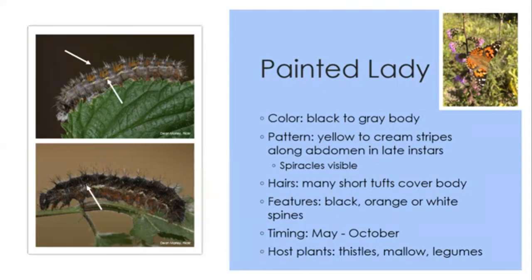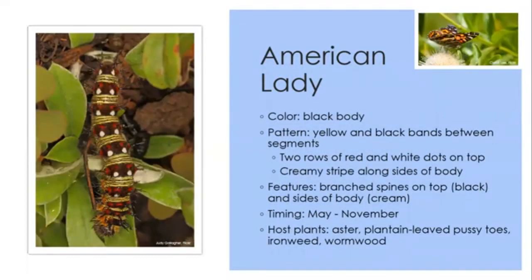While the painted lady butterfly looks very similar to the American lady, the caterpillars look drastically different. The American lady caterpillar has a black body overall with yellow and black bands between the segments, two rows of red and white dots on top, and a creamy stripe on the sides. It has branched spines all along the body that come out of the red dots, and the spines can range in color. May through November you can find them on asters, ironweed, and wormwood.